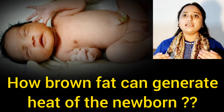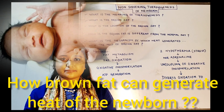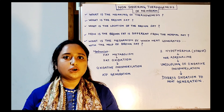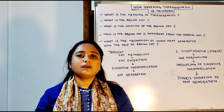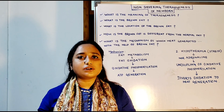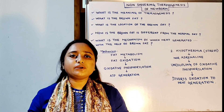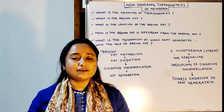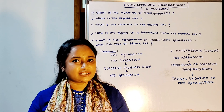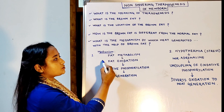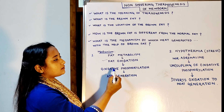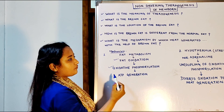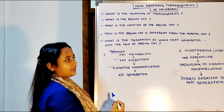What is the mechanism by which heat is generated with the help of brown fat? In the brown fat there are lots and lots of mitochondria. When we see fat metabolism in the mitochondria, we can see fatty acid oxidation. Fat undergoes oxidation followed by oxidative phosphorylation for the purpose of ATP generation.